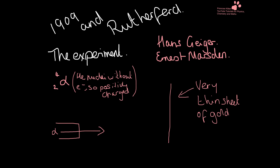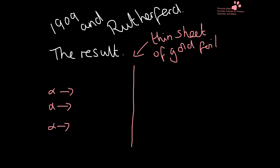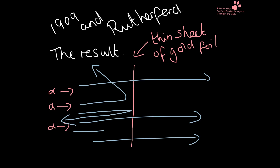The experiment that Geiger and Marsden did was the gold foil experiment. They fired alpha particles — which are helium nuclei without electrons, so they have a positive charge — very quickly out of a gun through a very thin sheet of gold. The hypothesis, if Thomson's model was correct, was that the positive charge would be spread all over the gold foil and the alpha particles would be slightly deflected uniformly. Instead, a large number went straight through, a few were partially deflected, and then a very, very few came straight back.